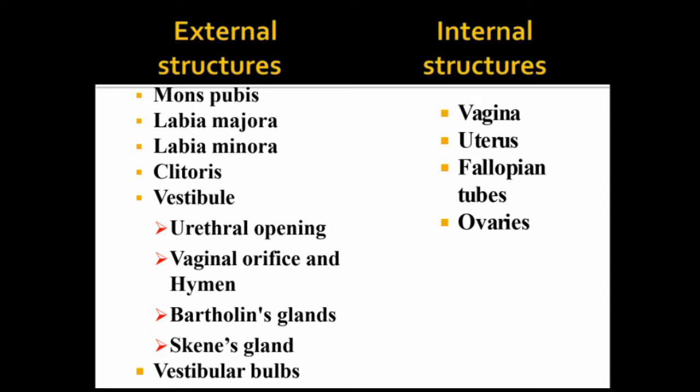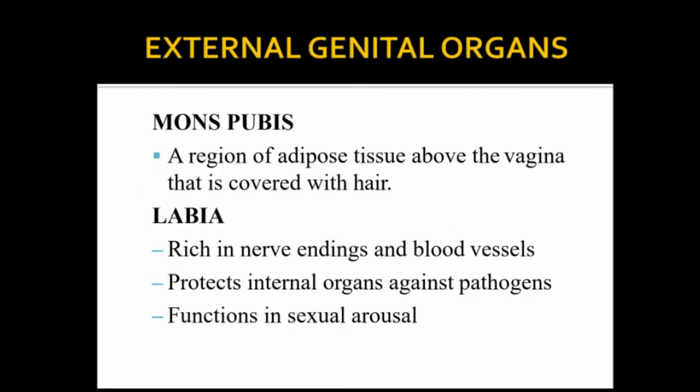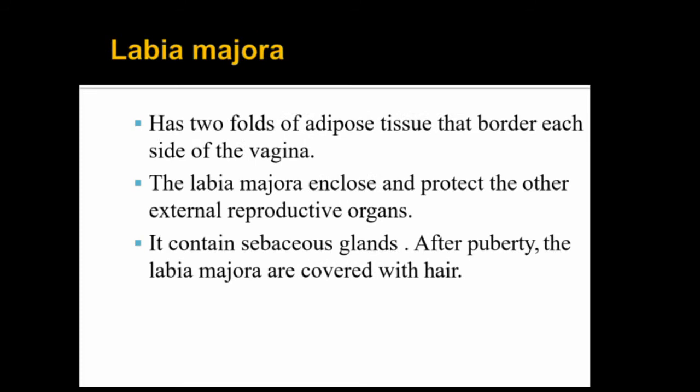The internal organs include the uterus, fallopian tubes, and ovaries. The external organs include the mons pubis, which is an origin of adipose tissue above the vagina covered with hair. It is a very important part containing nerve endings and blood vessels, and it protects internal organs from infection.